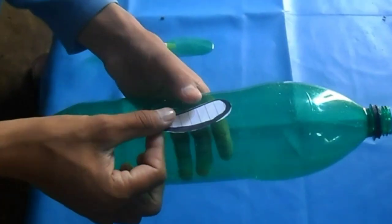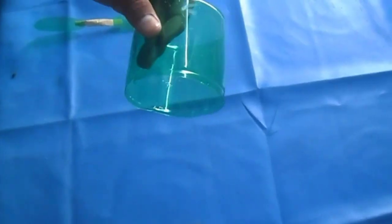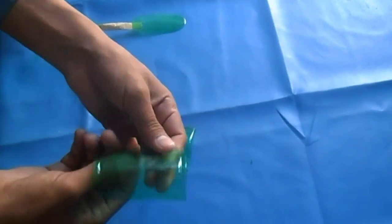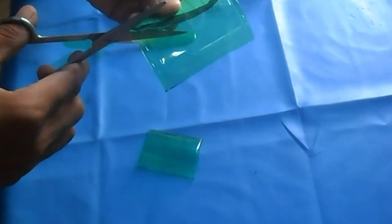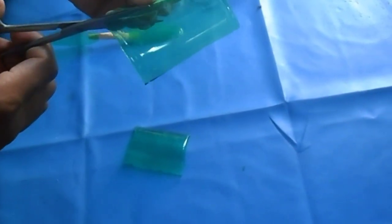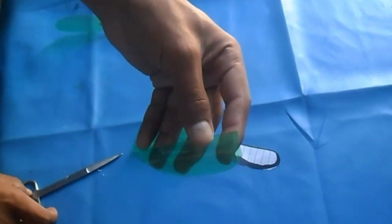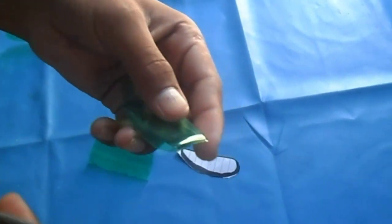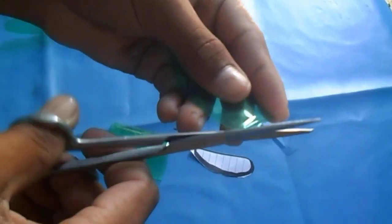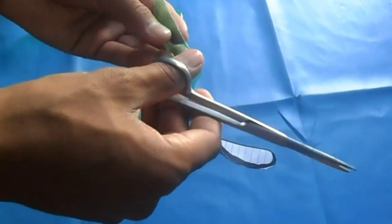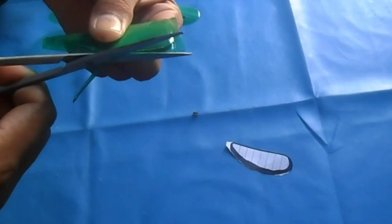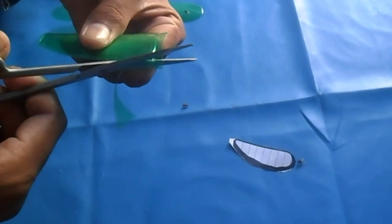First we will make the propeller using a Pepsi bottle. Draw the propeller on paper, then cut the propeller as we drew on paper. Cut down the first airfoil.